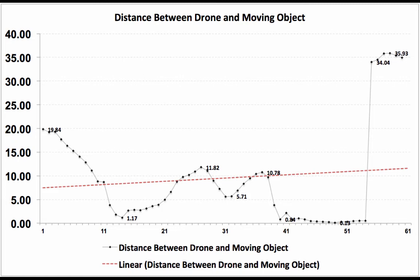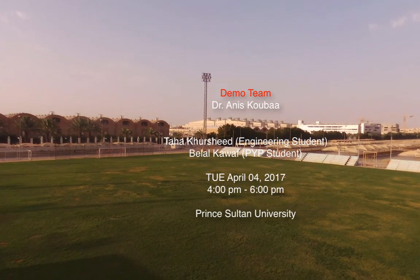Overall, the performance of the follower application is good and can be improved by increasing the speed of the vehicle, and also by improving the network connectivity between the drone, the person, and the cloud.